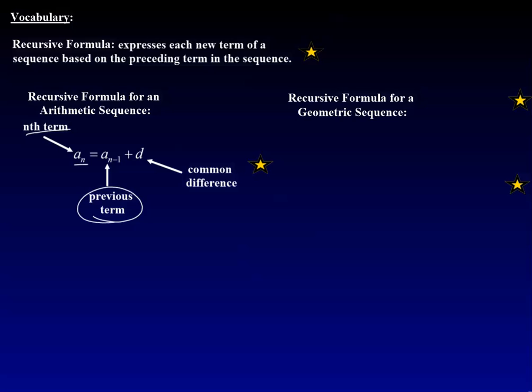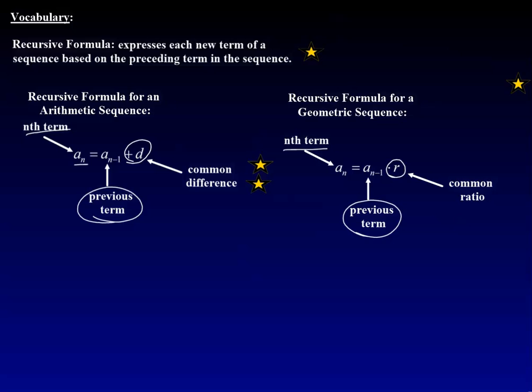A recursive formula for geometric sequences: a sub n equals a sub n minus 1 times r. The difference between arithmetic is that you are adding d or multiplying by r. Arithmetic is adding d, geometric we multiply by r. A sub n is the nth term, a sub n minus 1 is the term before it, and r is our common ratio.